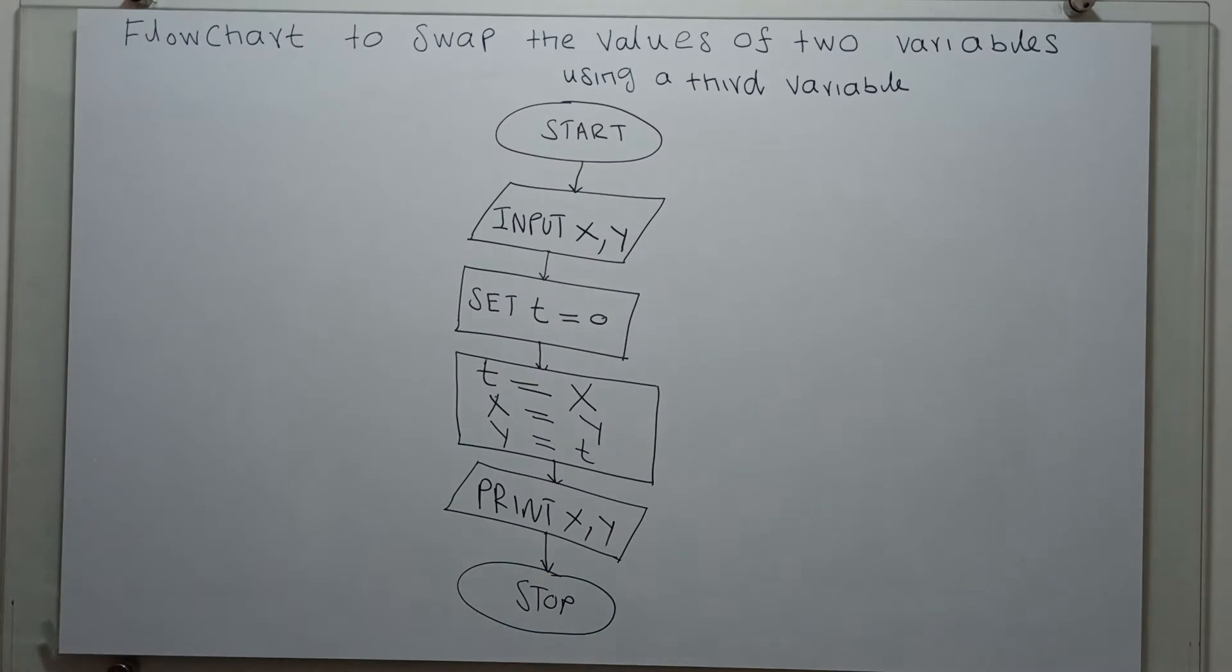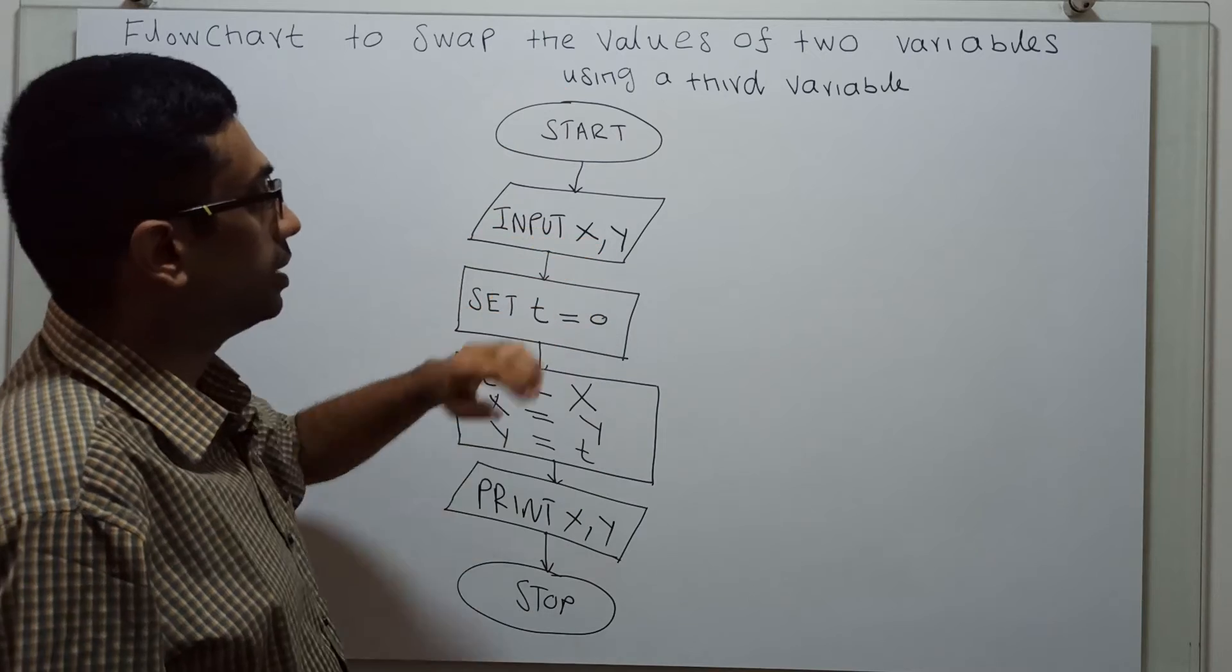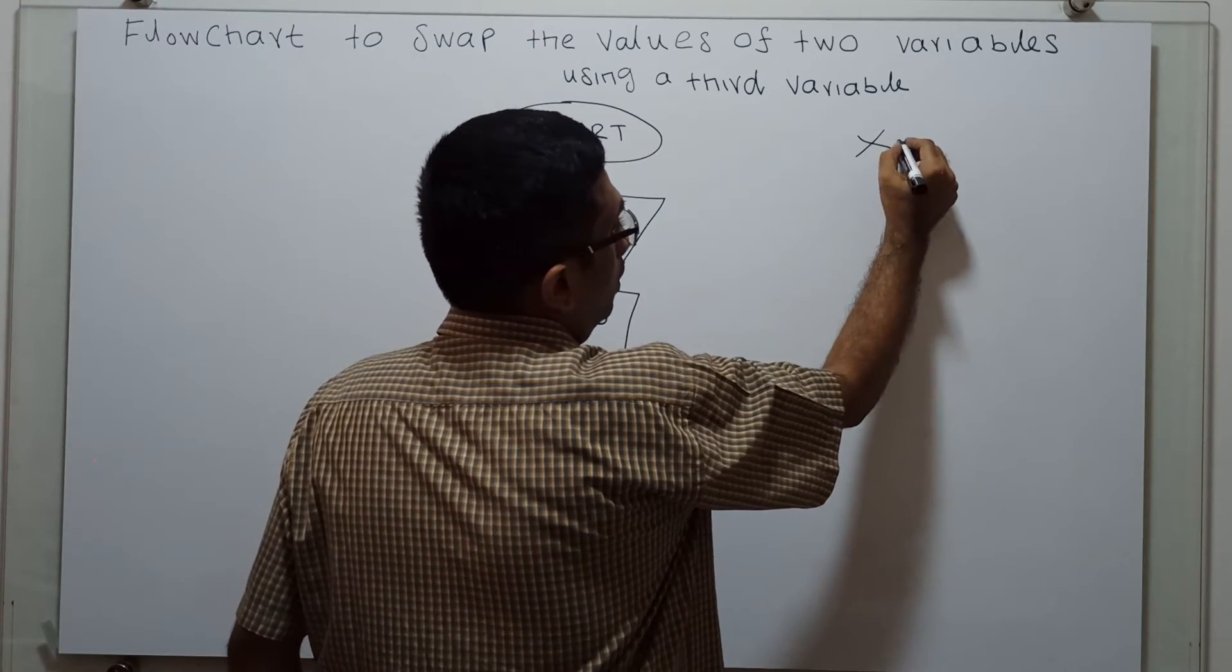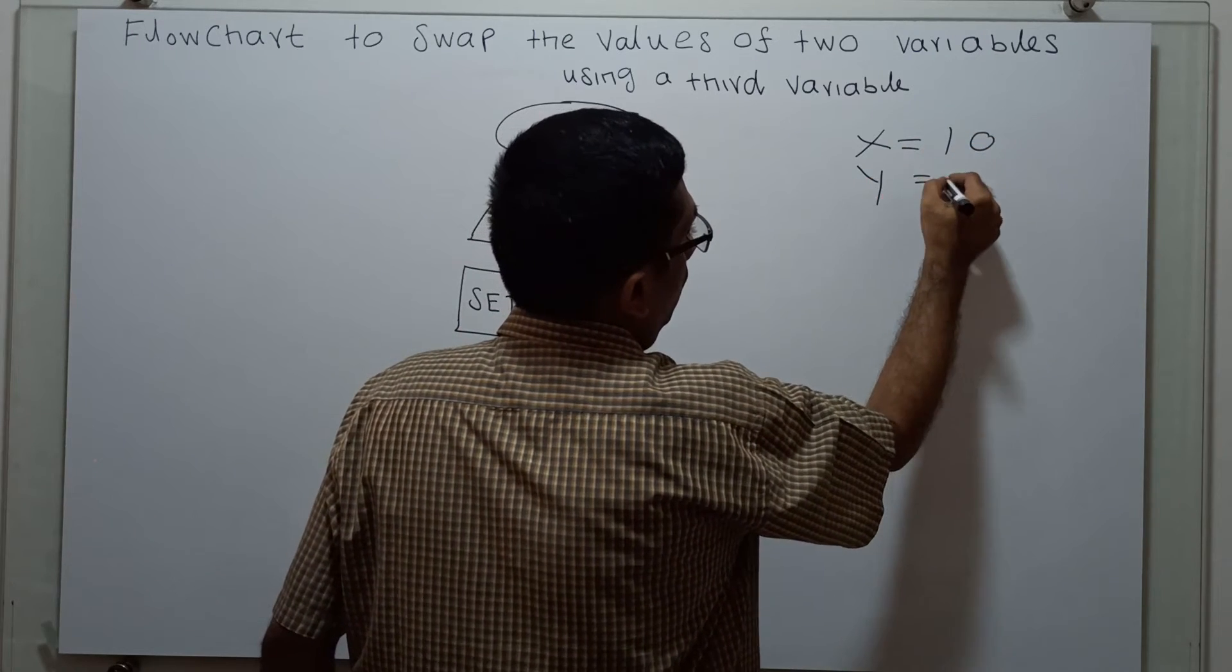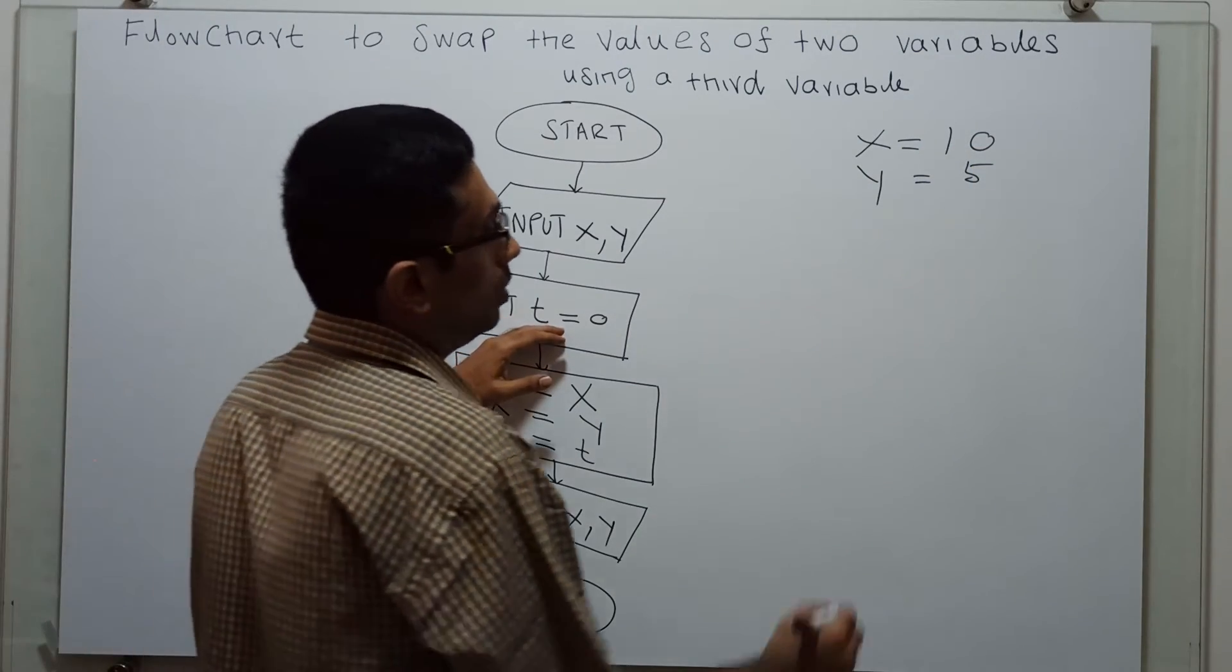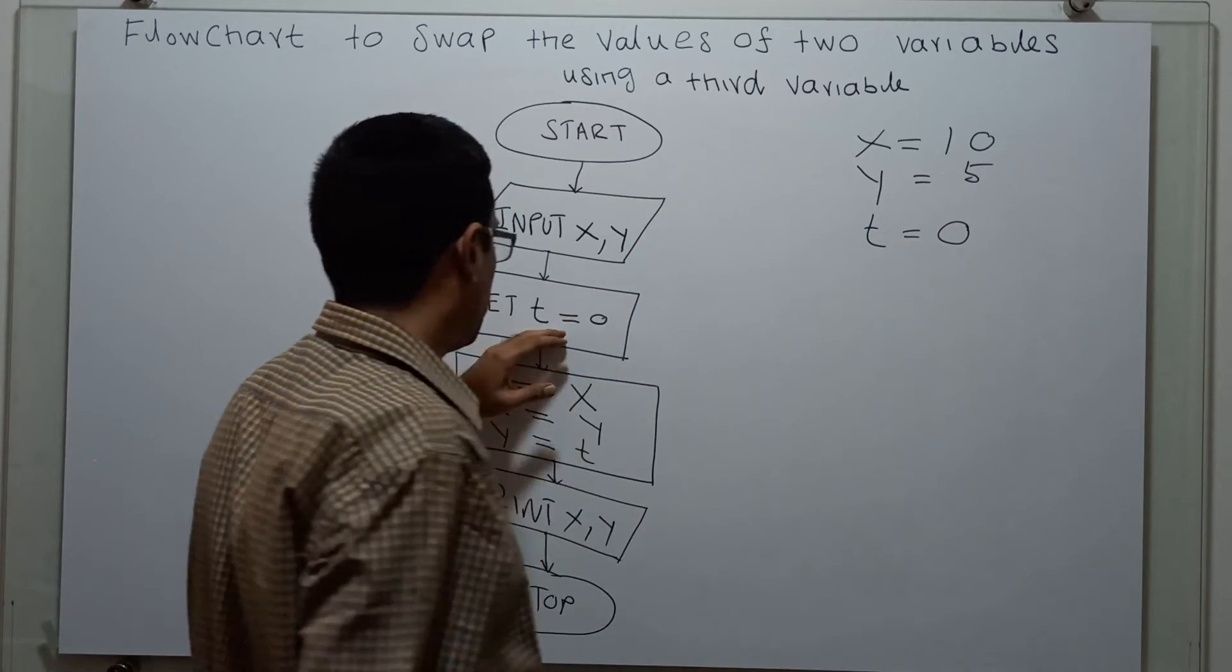That's it. Now, we will trace how it works. Start input x comma y. I am assigning x equal to 10, y equal to 5. In this step, set t equal to 0. The value of t equal to 0.